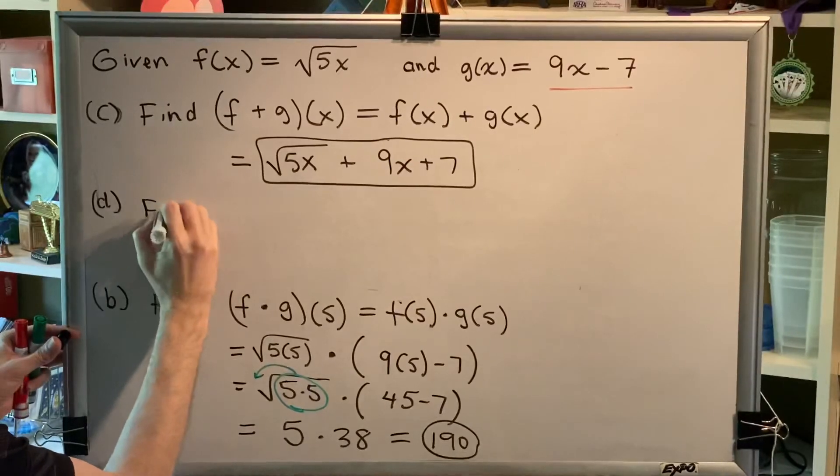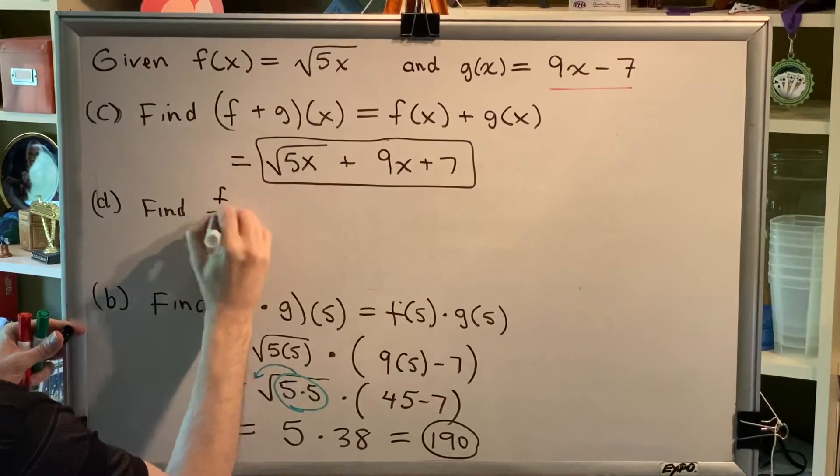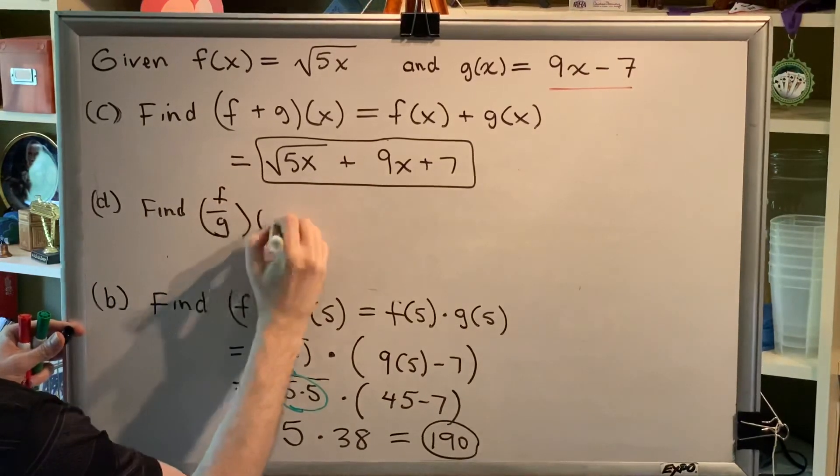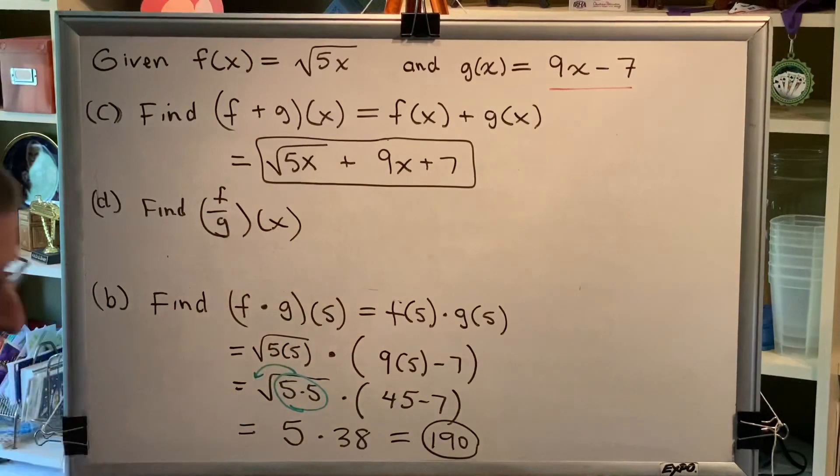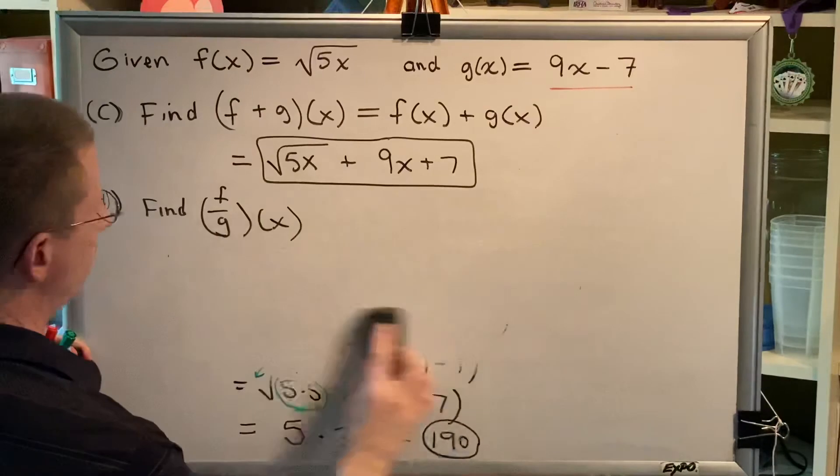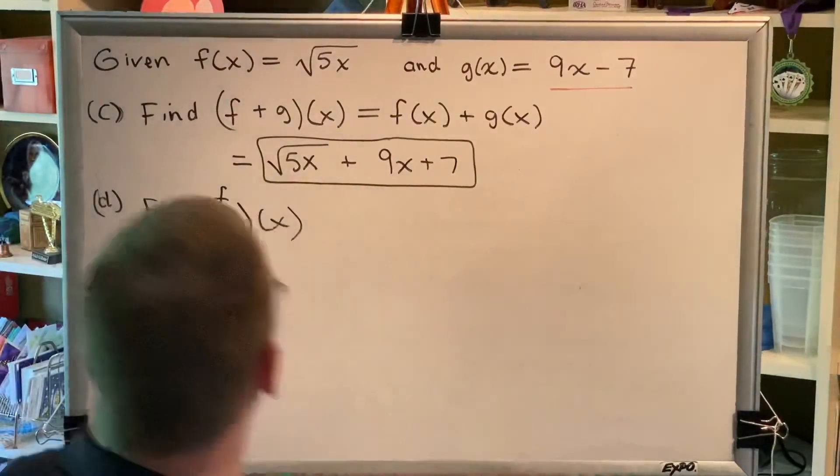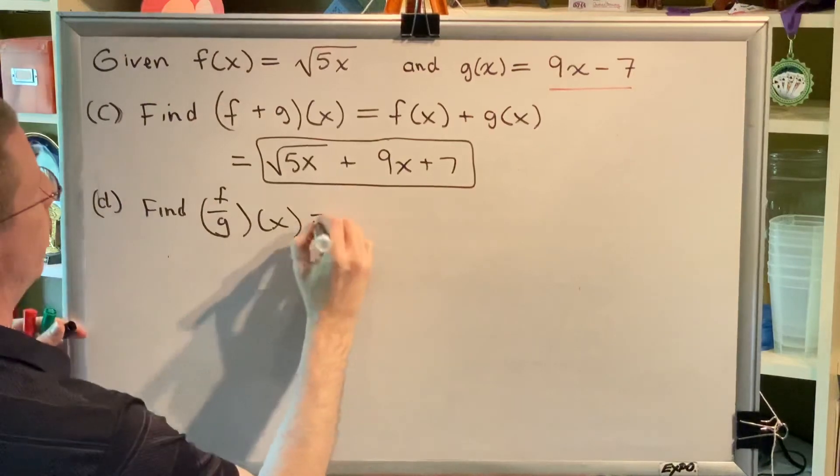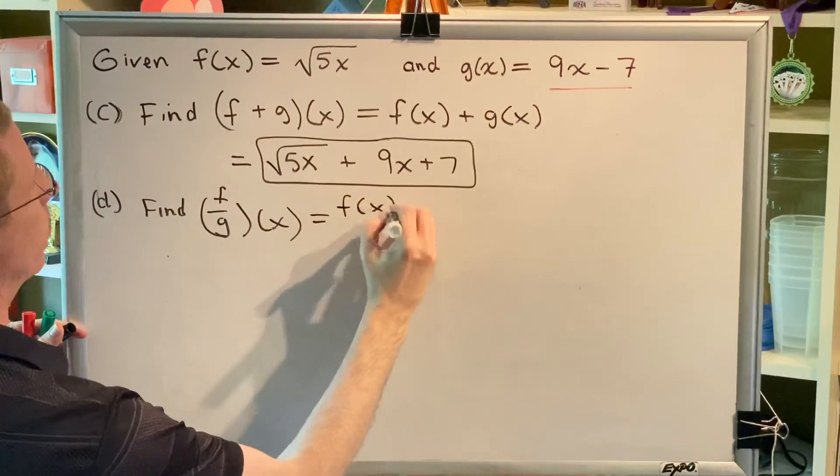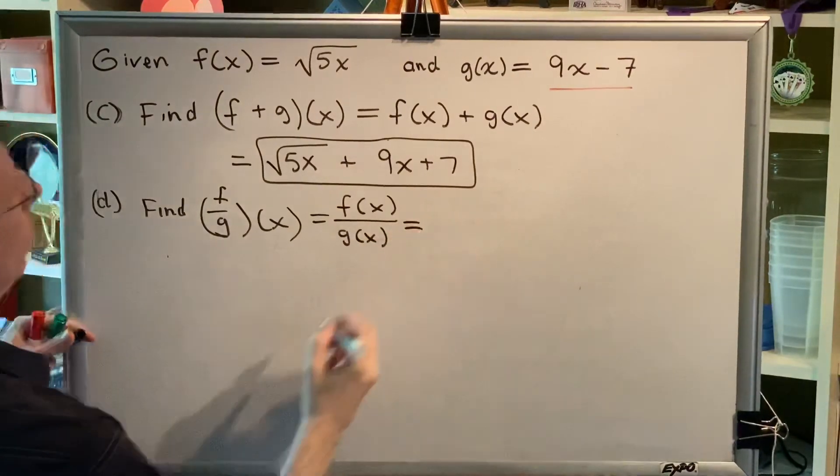And then, finally, that brings up part D. Part D says to find (f / g)(x). Well, (f / g)(x) just means take our two functions, f and g, and divide them. In other words, this will be f(x) over g(x).